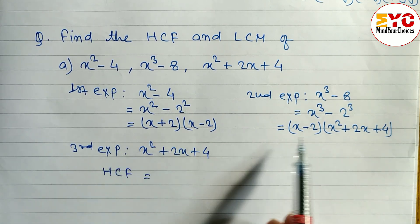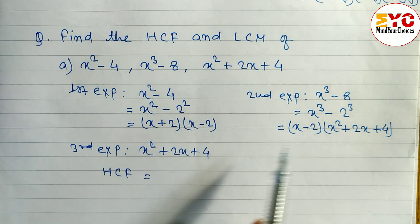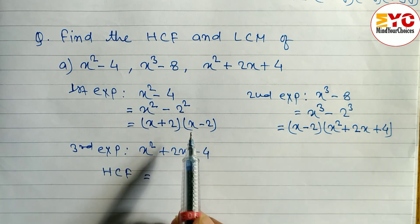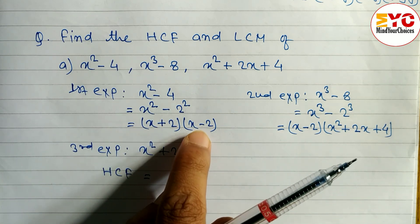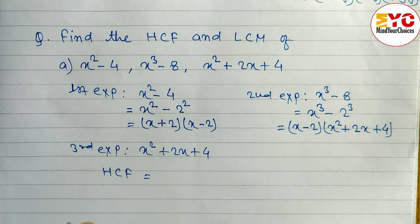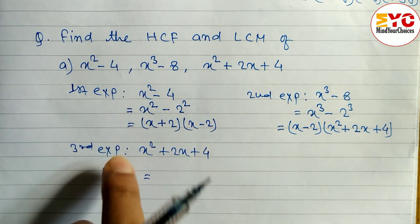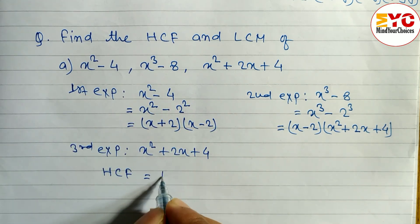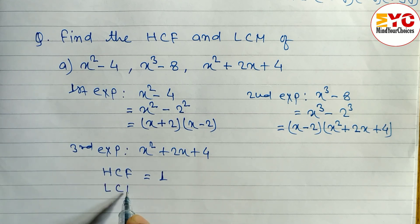Now for the SCF — it means the common element across all expressions. x² + 2x + 4 appears in the second and third but not the first. x + 2 appears in the first but not the others. x - 2 appears in first and second but not the third. Since there is no element common to all three expressions, the SCF is 1.